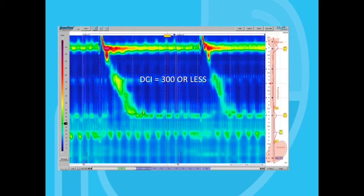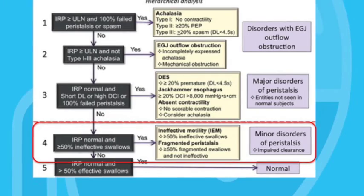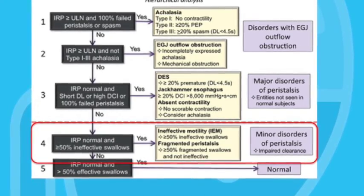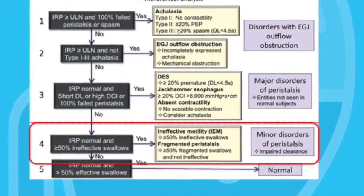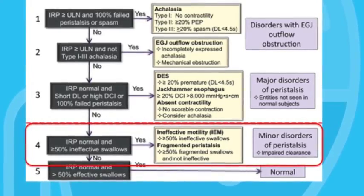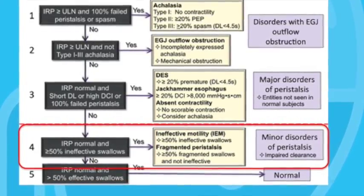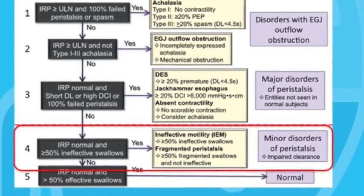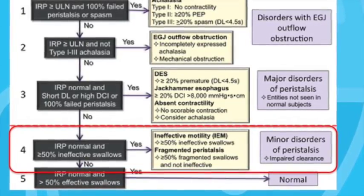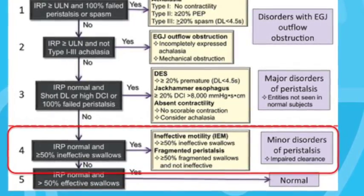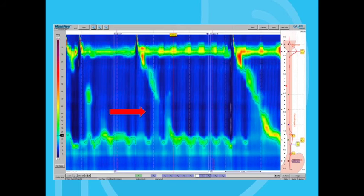Incidentally, IEM is the most common motility disorder we see in the GI motility lab. The final disorder in this category is large breaks in the peristaltic waves more than 5 centimeters in length. If this happens in more than 50% of swallows, it is diagnostic of fragmented peristalsis, as seen in the tracing shown.